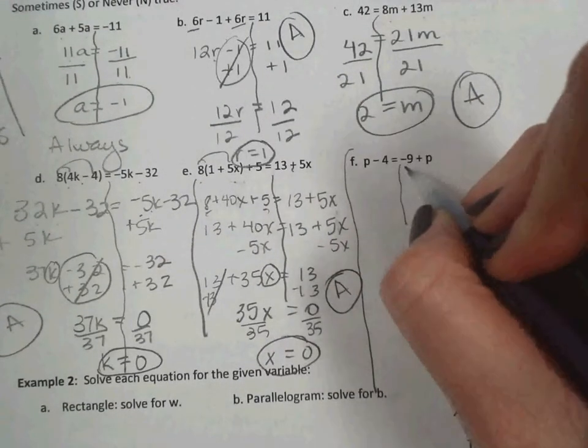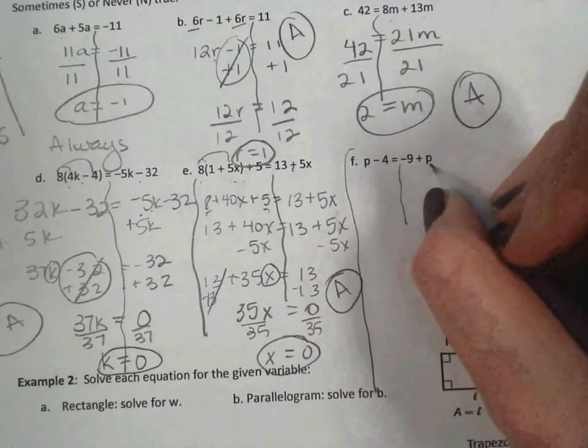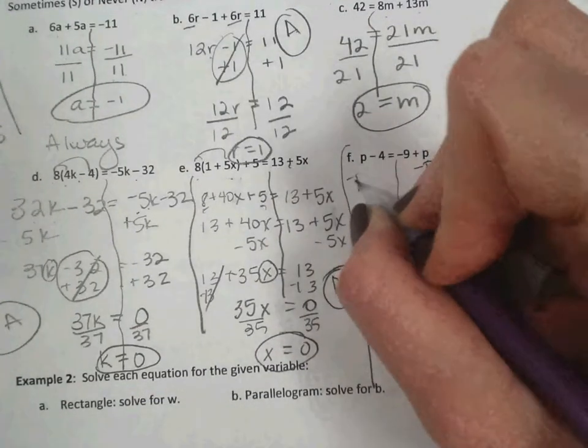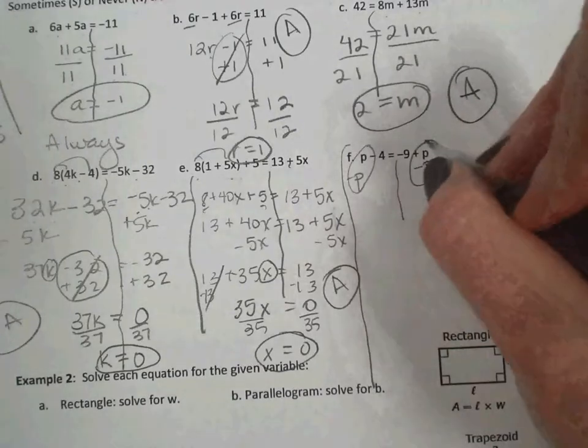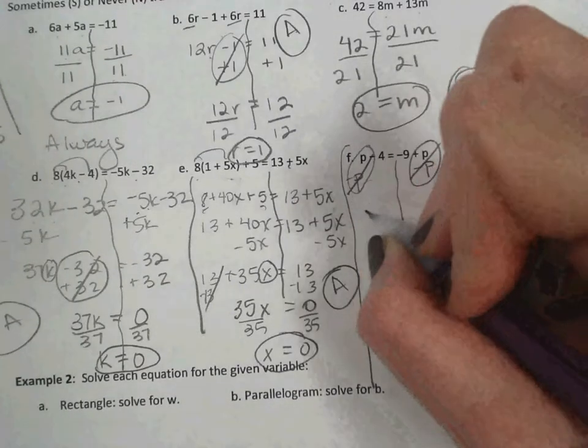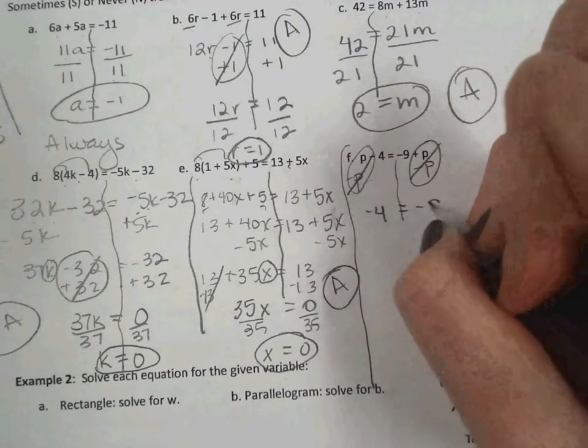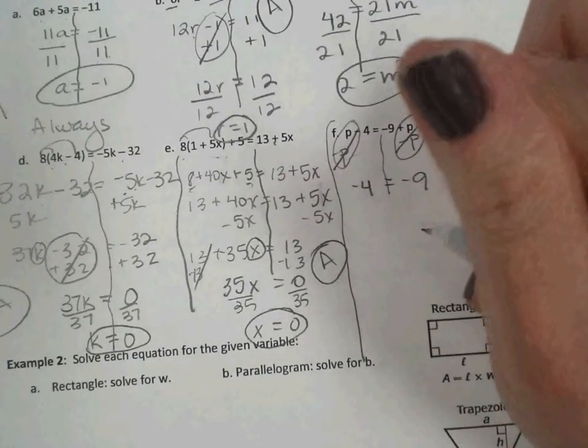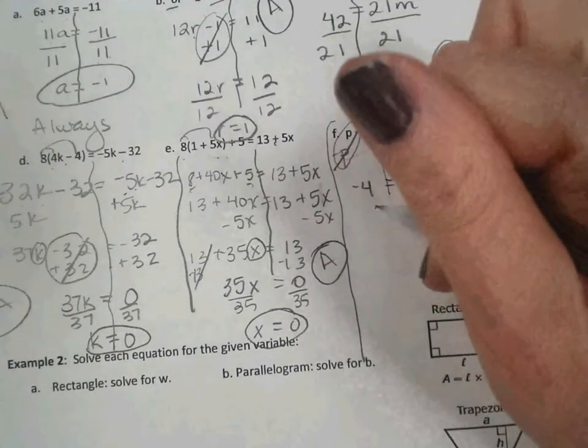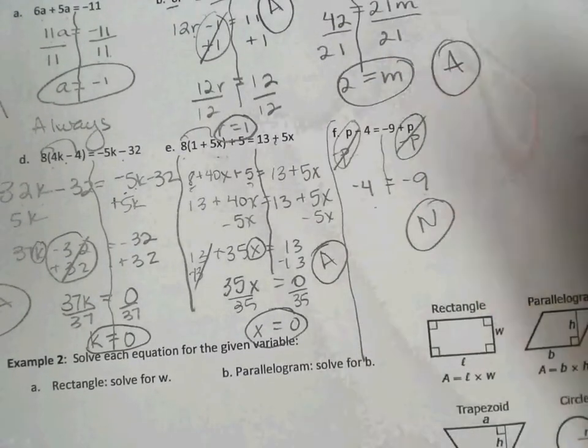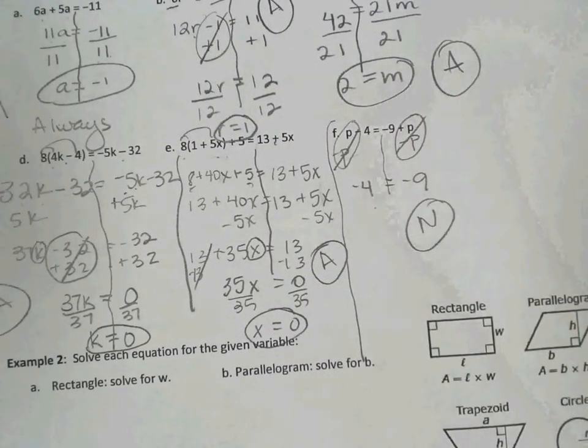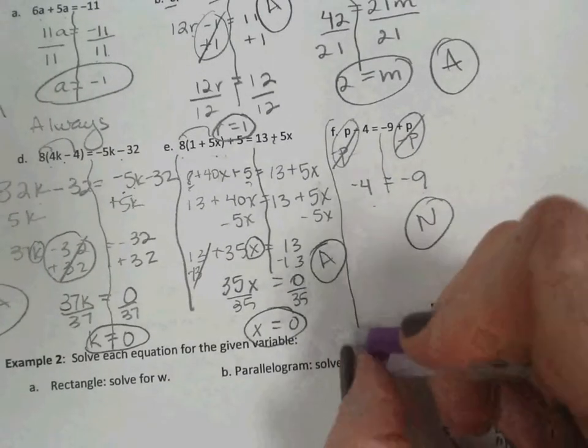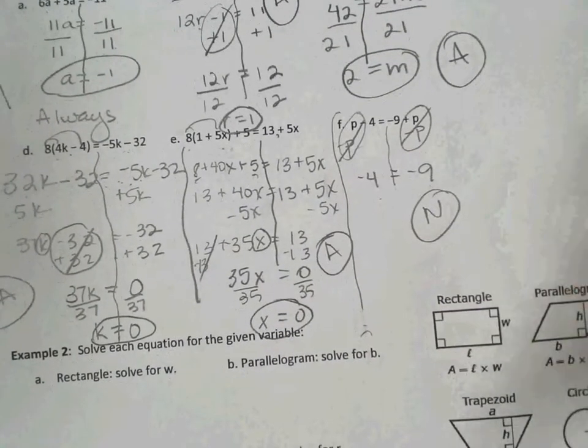Last one. Collect the p's. Collect the variable. We'll subtract p from both sides. So we get, actually it cancels out on both sides. So we wind up with negative 4 equals negative 9. And finally, we have a situation where this is never true. Negative 4 will never equal negative 9. Since our variables canceled out on both sides, we wind up with a false statement. So we can write never true.